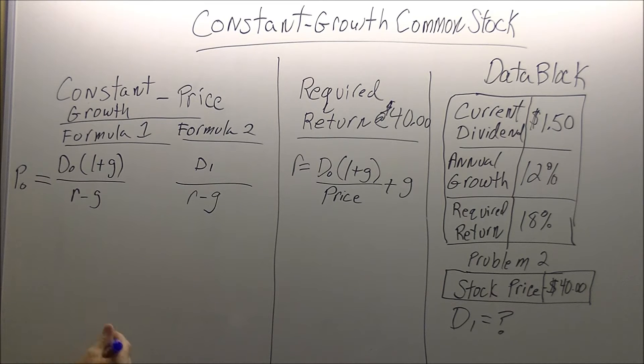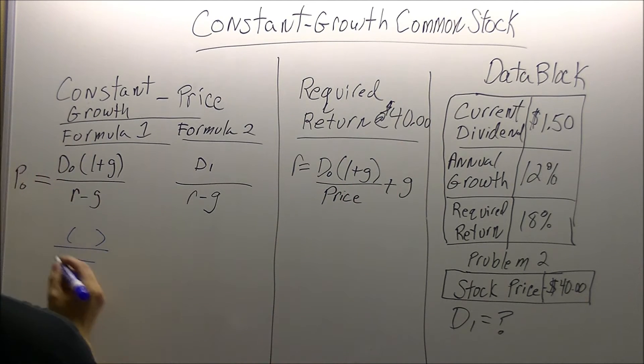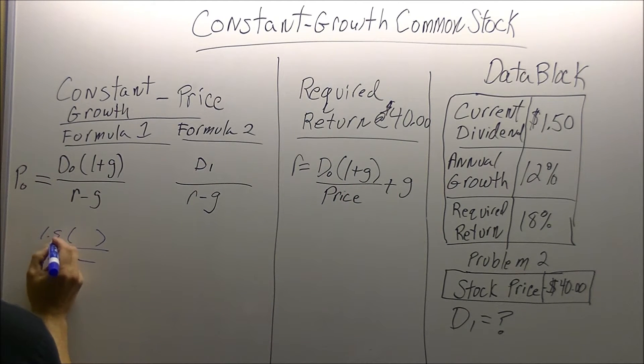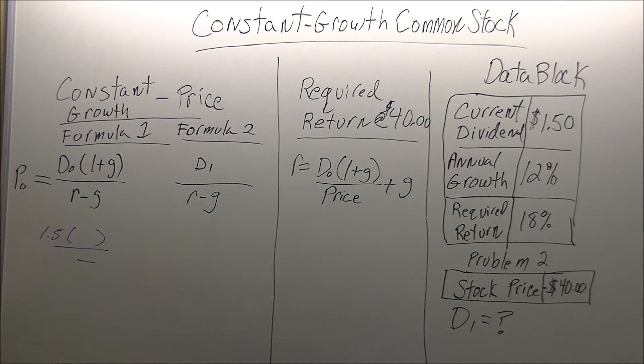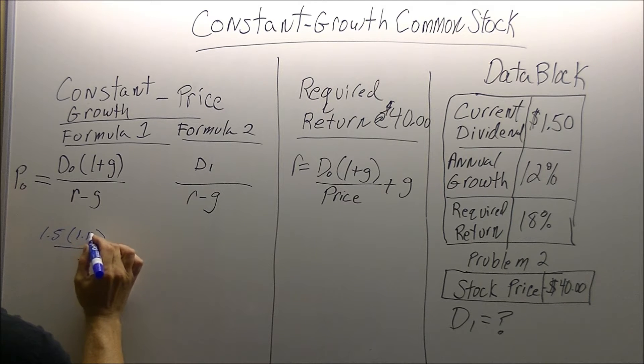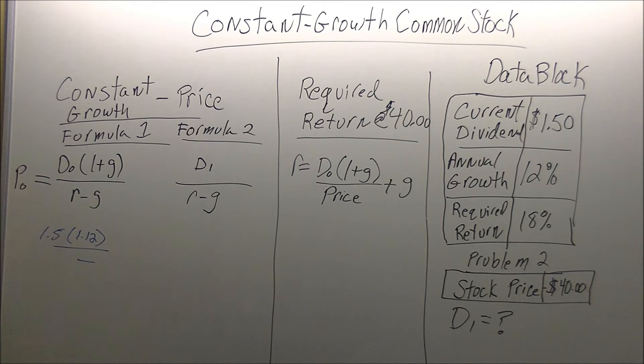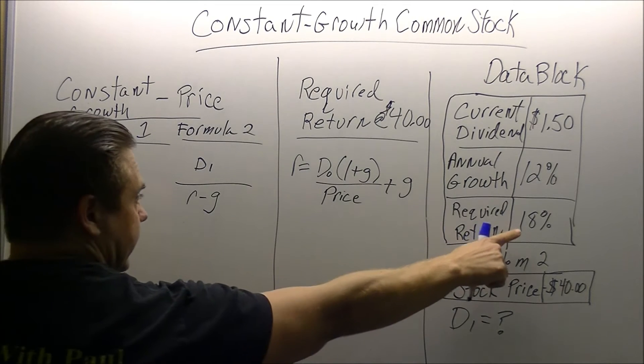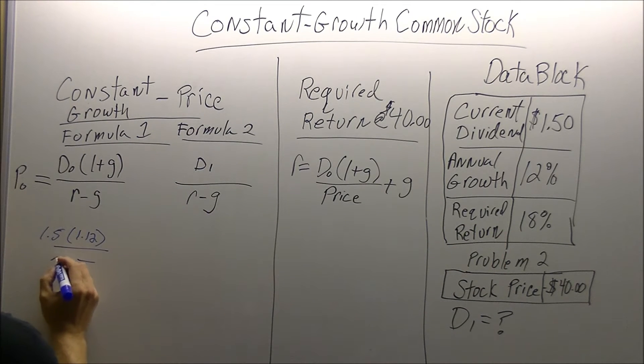For dividend D0, we always start with our structure. All we have to do now is just plug in some numbers. Current dividend is $1.50. The next one is going to be 1 plus G. Annual growth is 12%, decimal form is 0.12. So we'll add 1 to 0.12 gives us 1.12. And then we look for the required return.